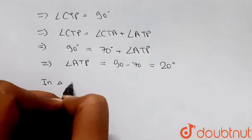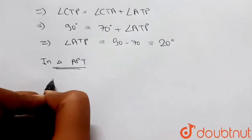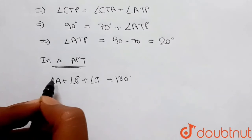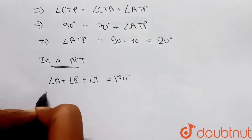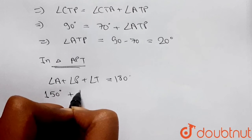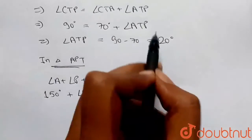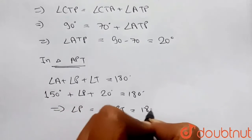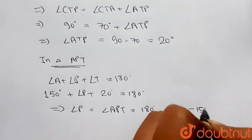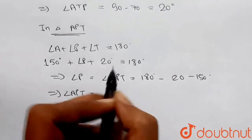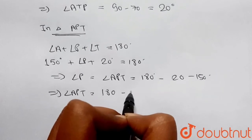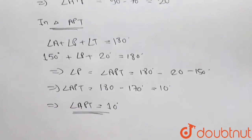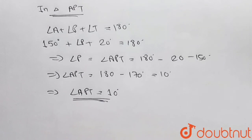In triangle APT, the sum of angles A, P, and T equals 180 degrees. Angle TAP is 150 degrees and angle ATP is 20 degrees. So angle APT equals 180 minus 150 minus 20, which gives angle APT equal to 10 degrees. That's our third answer. I hope this helps — thank you.